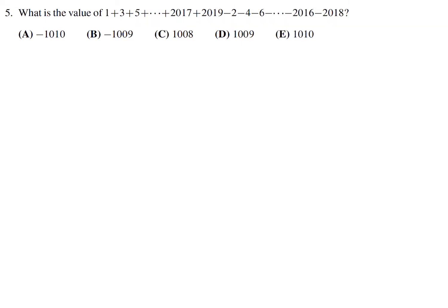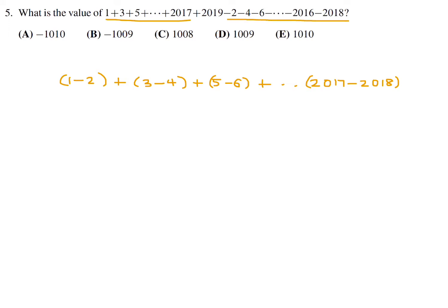What is the value of this big long expression? We can group it: pair the first term with the negative 2, then 3 with negative 4, then 5 with negative 6, and so on. So we have 1 minus 2, plus 3 minus 4, plus 5 minus 6, all the way to 2017 minus 2018. This question is a little tricky because you'll notice there's still 2019 at the end, so you have to stick that at the very end. Each of those pairs equals negative 1.